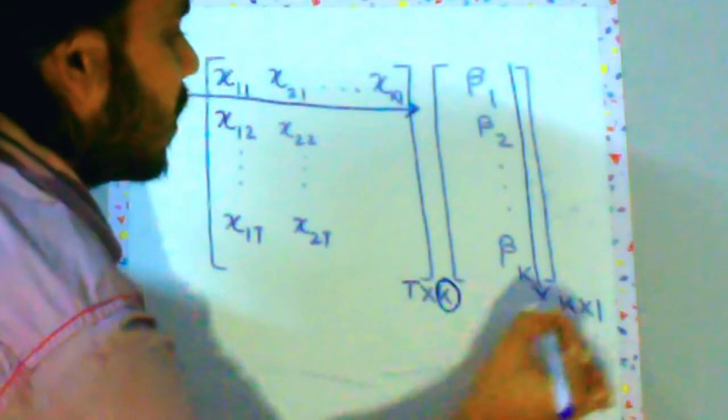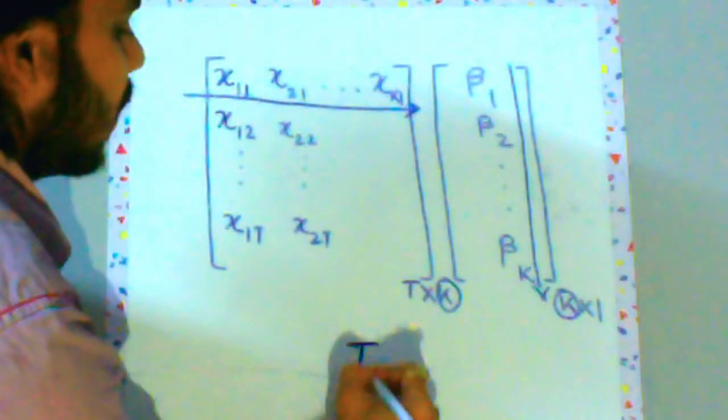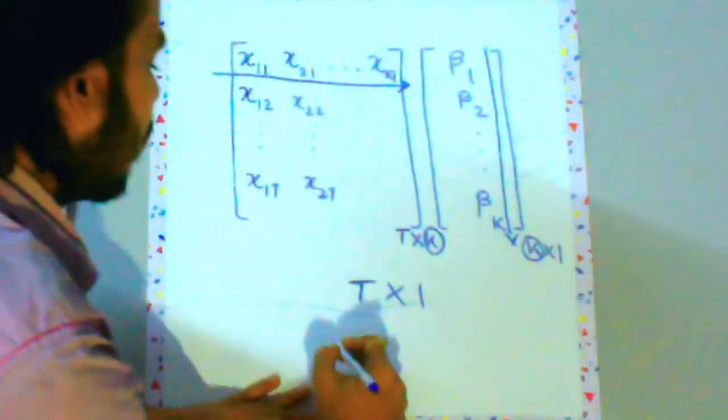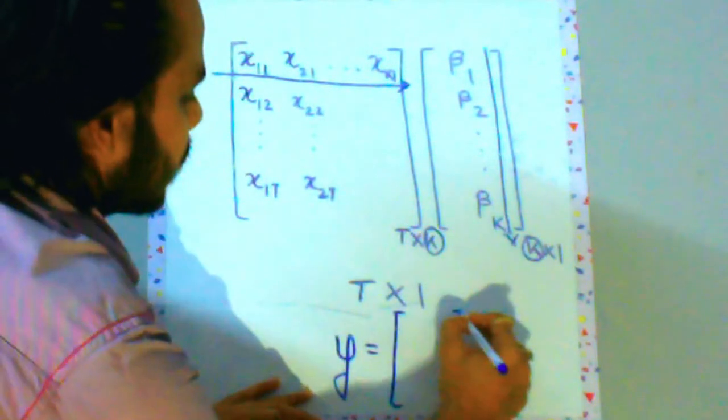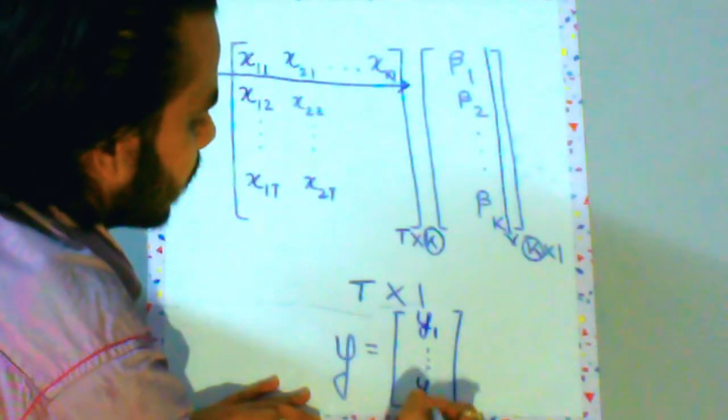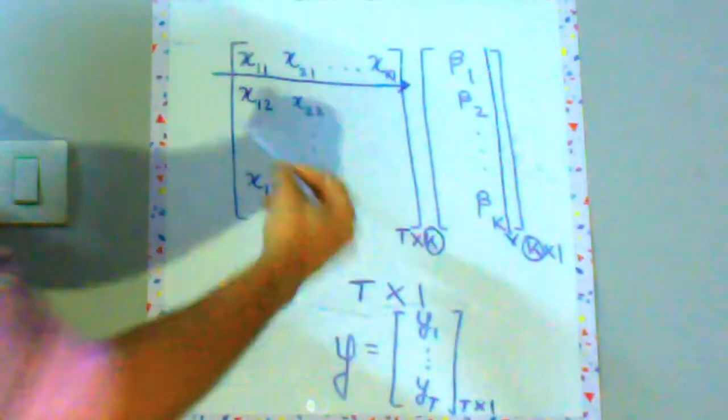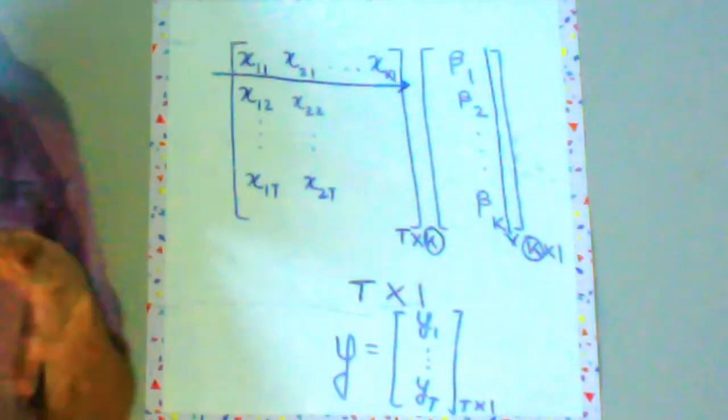and the resulting matrix will be having a dimension of t cross 1. Now which is the dimension of y which we will be having? If you recall y is going to be y1, y2 and so on till yt. So dimension over here is t cross 1. If you multiply these two matrices you will also get a matrix of dimension t cross 1 which is kind of predictable.